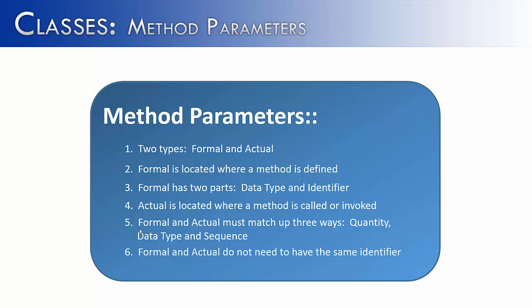Finally, formal and actual parameters do not need to have the same identifiers. If a variable has one name in one method and is passed into another method, the identifier does not have to be the same — it can be, and it won't cause problems, but in most cases it will not have the same name. Understanding how parameters get from a method call into a method heading via actual and formal parameters is extremely important in understanding how methods work.